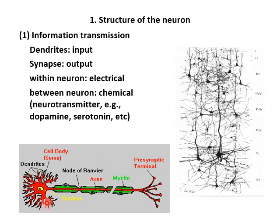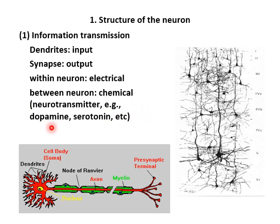Dendrites are the structure through which this neuron receives input, and synapse output. The information transmission within a neuron is electrical, whereas the information transmission between neurons — in other words, between this neuron and neighboring neurons — is chemical, via neurotransmitters such as dopamine, serotonin, and so on.